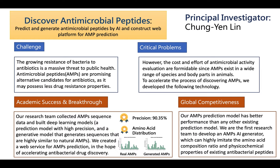We built deep learning models, including a prediction model with high precision and a generative model that generates sequences highly similar to natural AMPs. Our AMPs prediction model has better performance than any other existing prediction model. We are the first research team to develop an AMPs AI generator, which can highly imitate the amino acid composition ratio and physicochemical properties of existing antibacterial peptides.